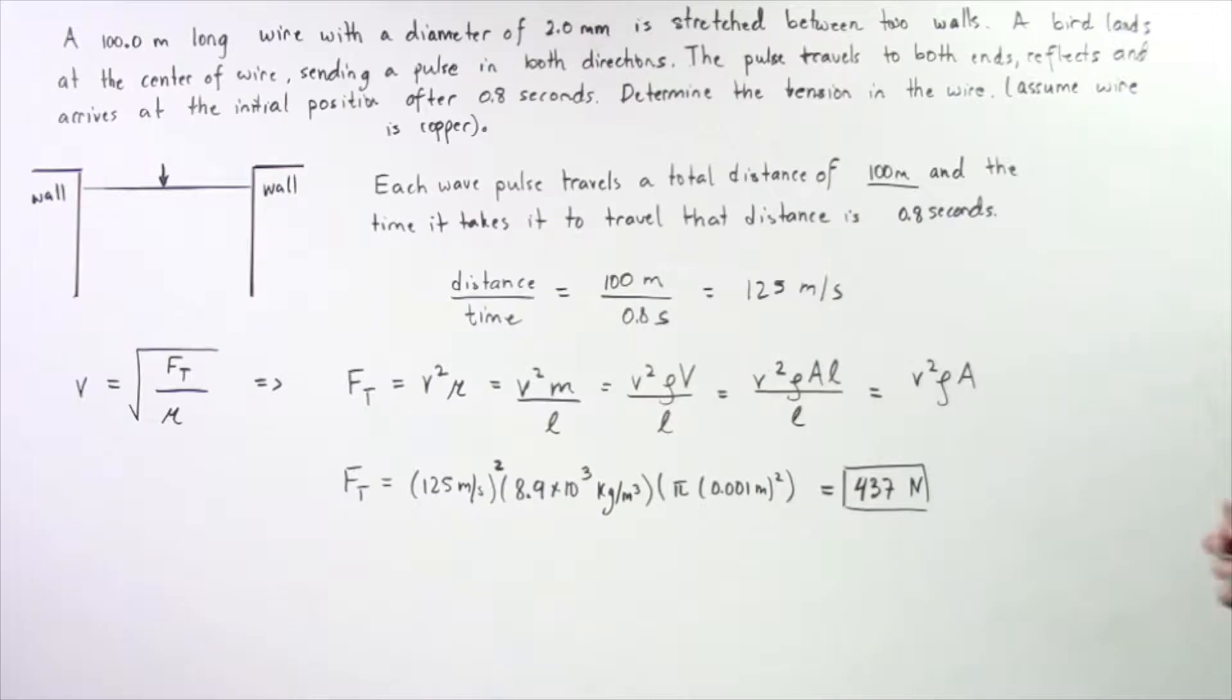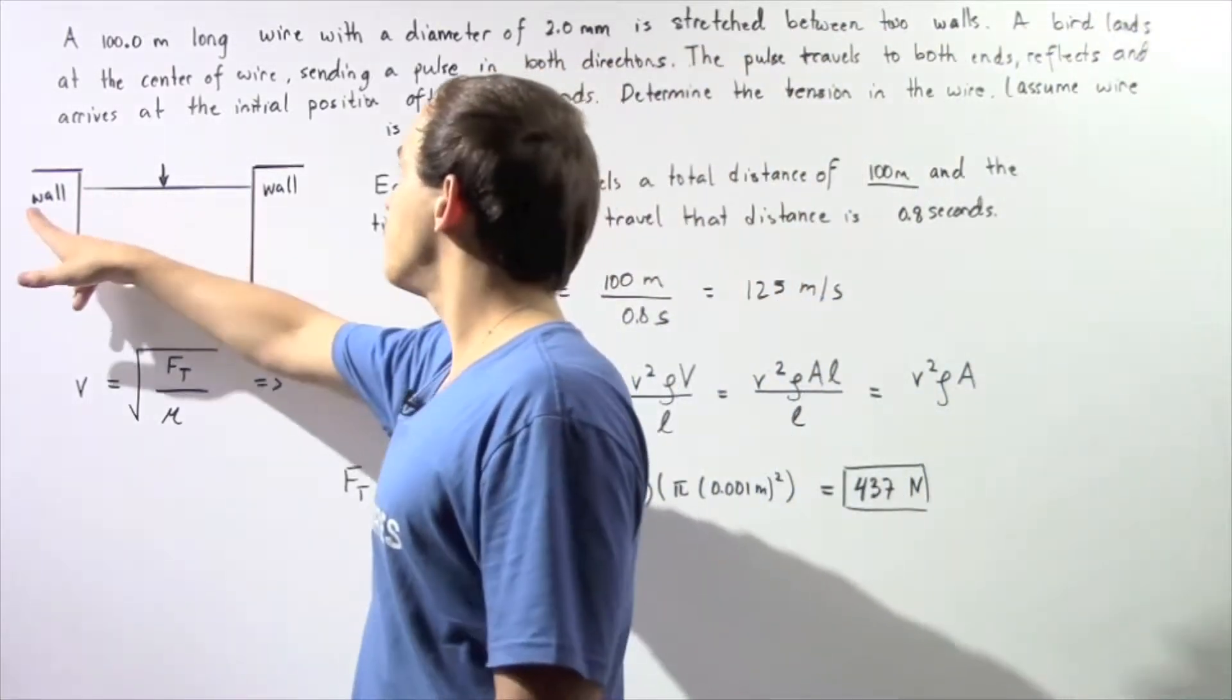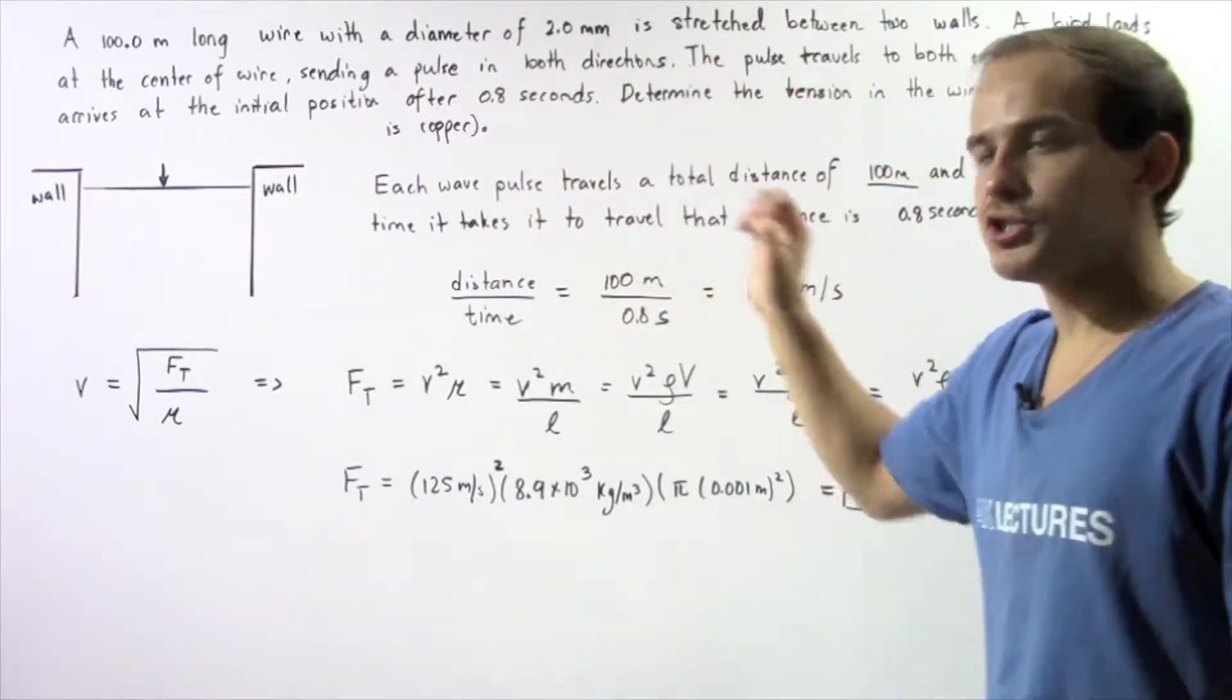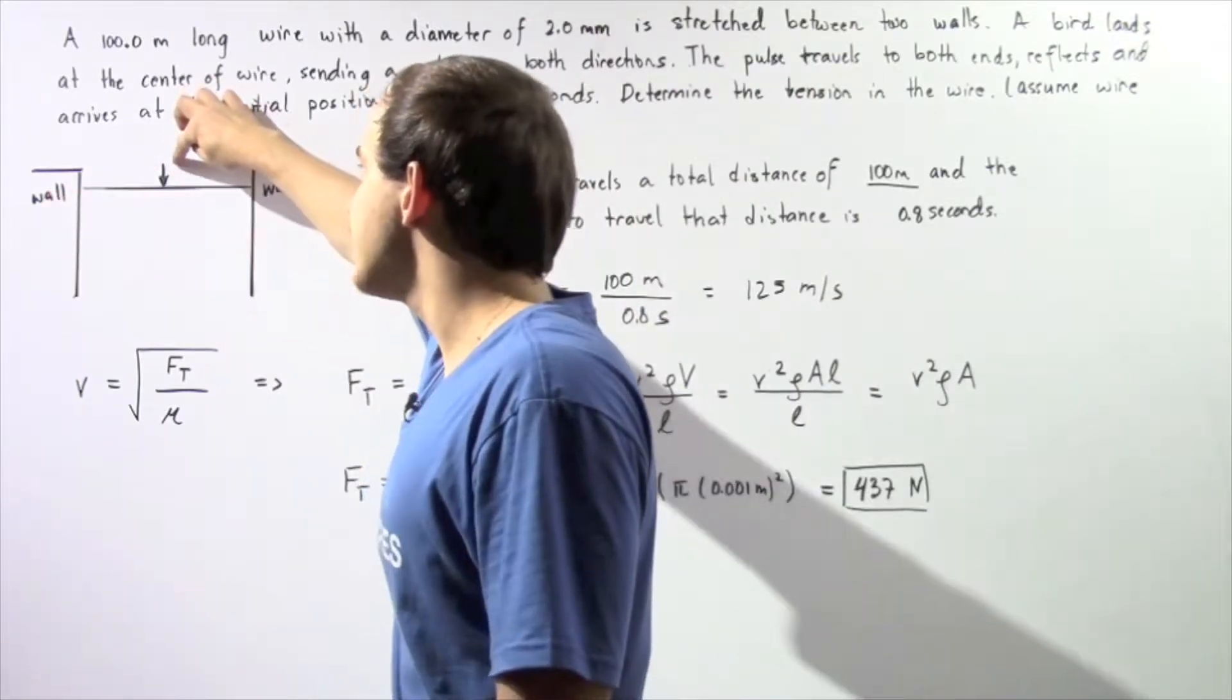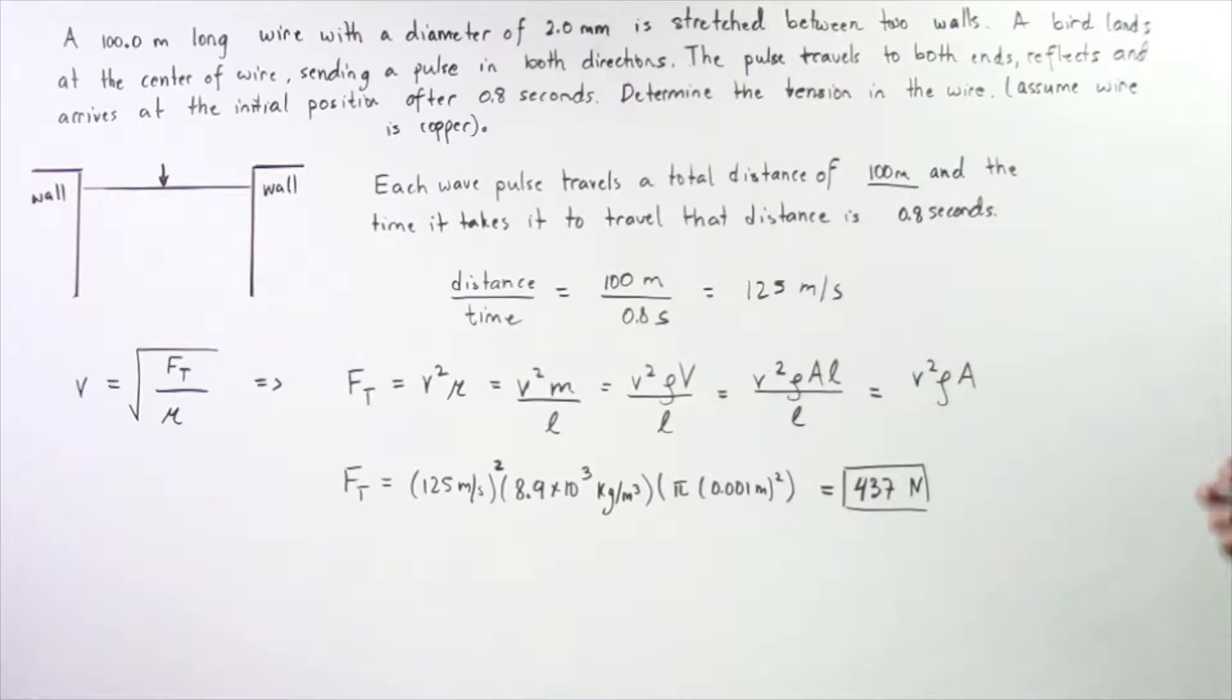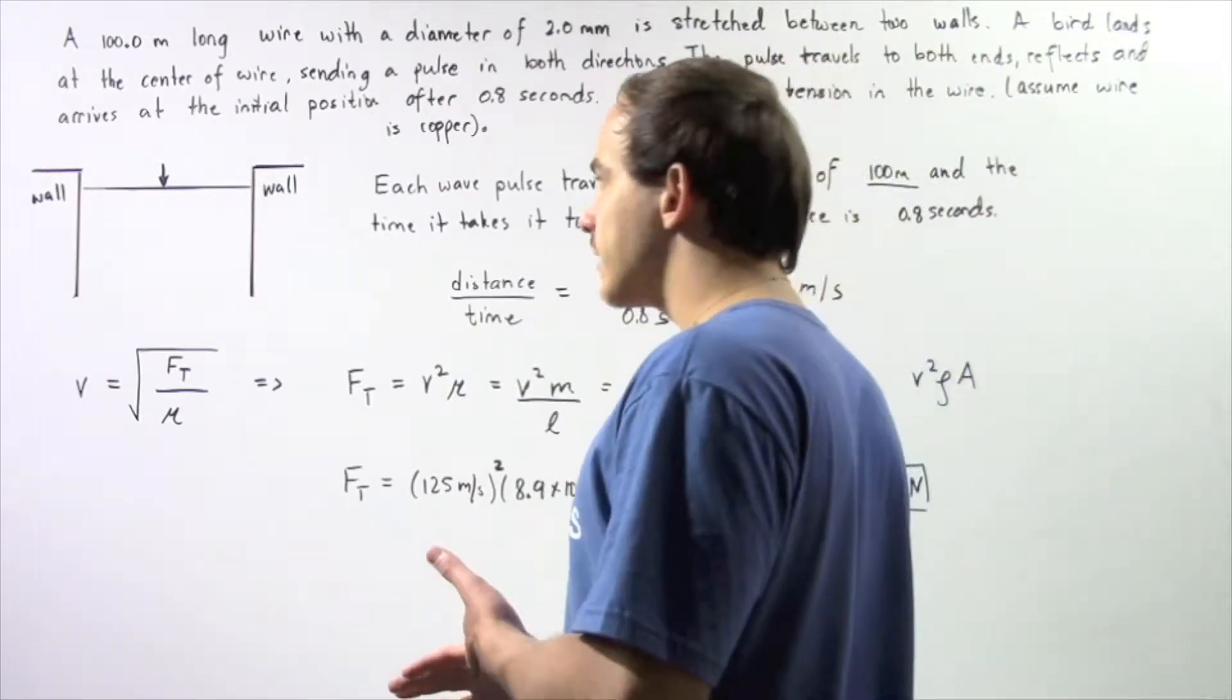A bird then lands at the center of the wire, 50 meters from the wall, sending a pulse in both directions. So a pulse travels in this direction as well as in this direction. The pulse travels to both ends, reflects, and arrives at the initial position after 0.8 seconds.